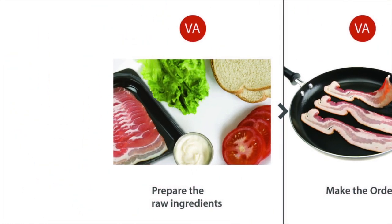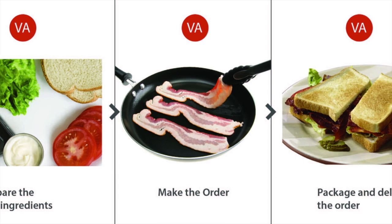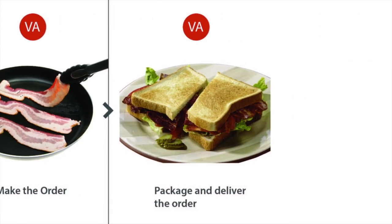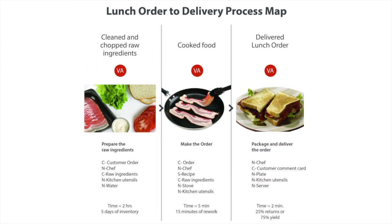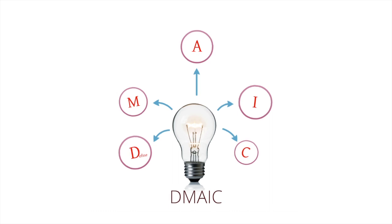Step five is to identify each process step as either value-added or non-value-added. In our example, all three process steps happen to be value-added because they meet all criteria of the three C's — though this is not typical for most processes. Once you've completed a detailed process map, key controllable and/or critical inputs will become apparent. These inputs are the starting point for actions you'll take in the next DMAIC phase — analyze.